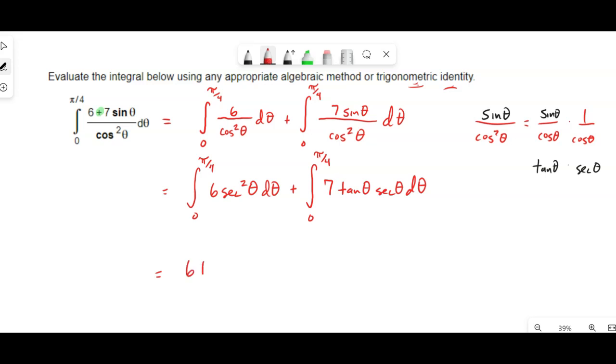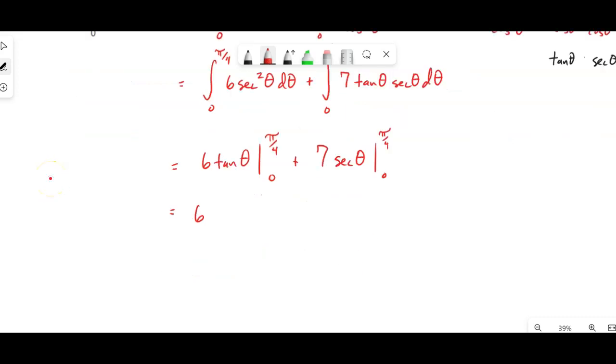So this becomes six tangent theta from pi over four down to zero, plus this just becomes seven secant theta from pi over four down to zero. The tangent of pi over four is one, and then the tangent of zero is zero. So that part's just going to be six, all right?